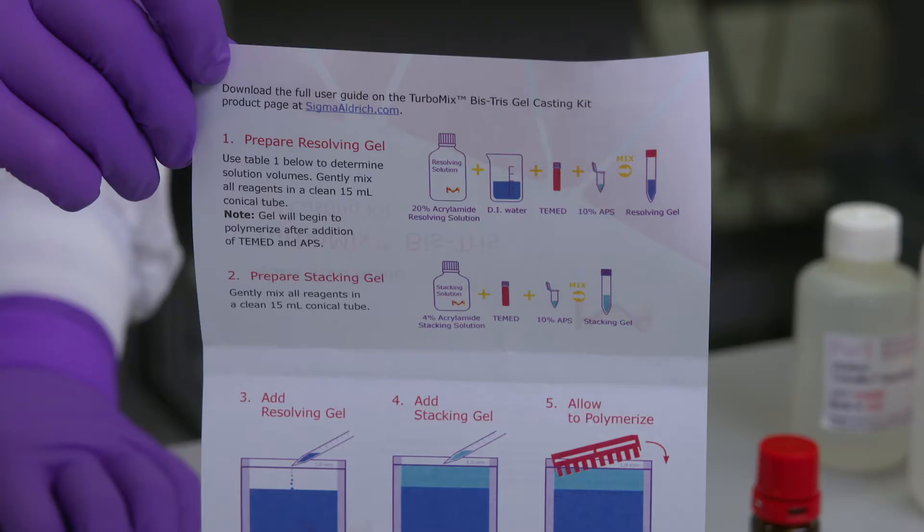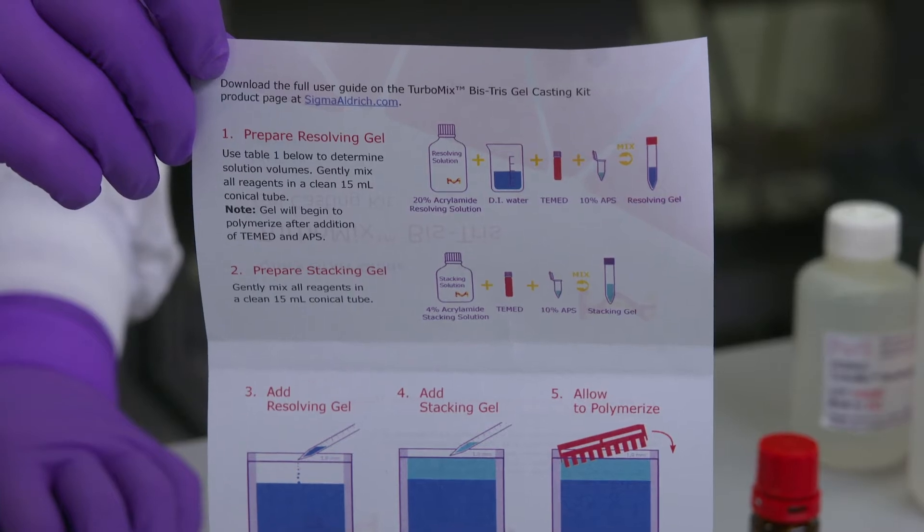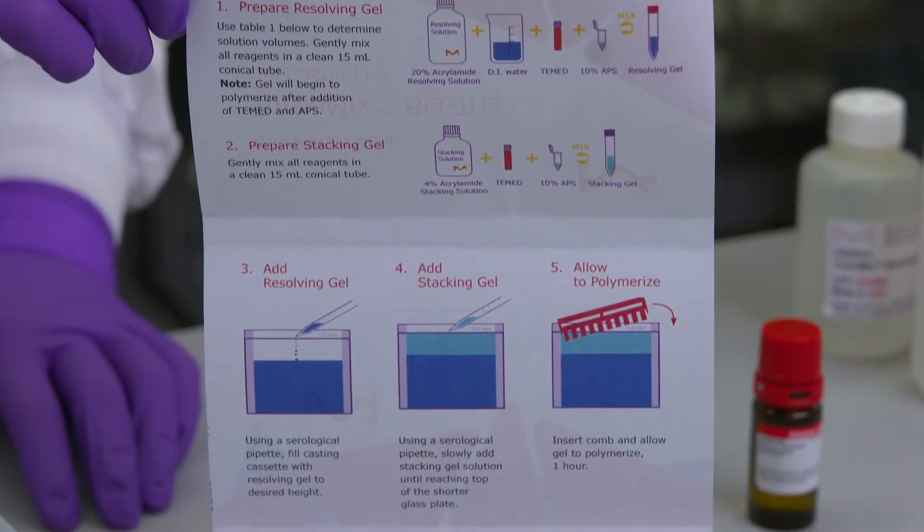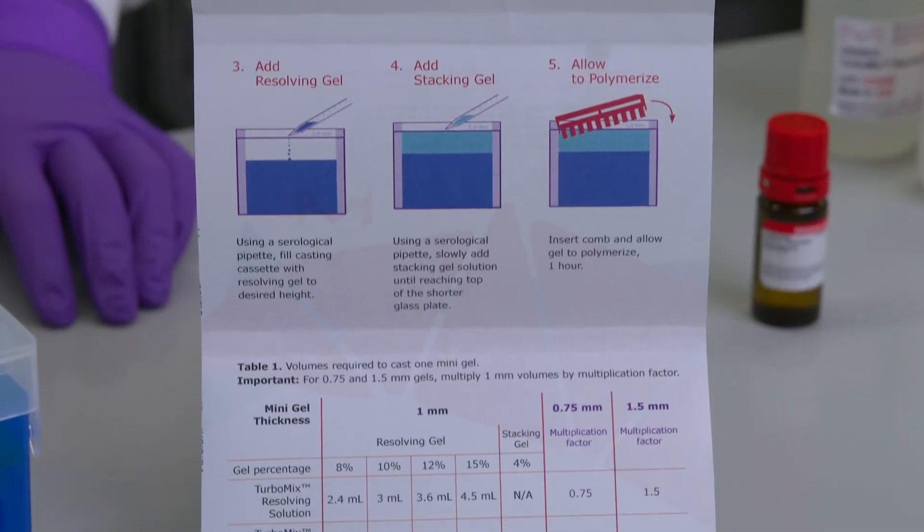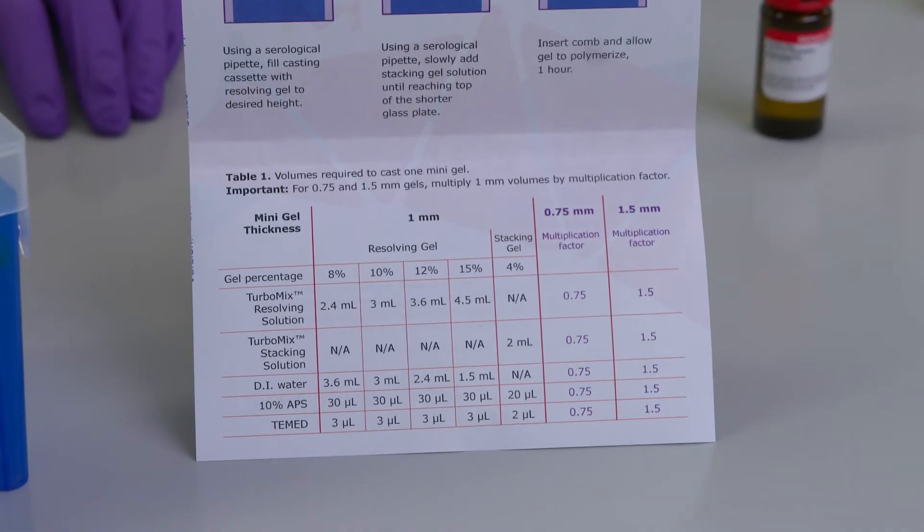Now I'll mix my resolving and stacking gels. You can use the tables in the user guide to calculate how much resolving and stacking solution you'll need. For this size cassette we'll need 6 milliliters of resolving solution and 2 milliliters of stacking solution.